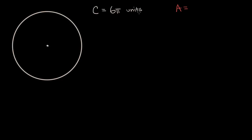First, think about if you could figure out the area for this particular circle, and then let's see if we can come up with a formula for, given any circumference, can we figure out the area and vice versa? All right, now let's work through this together. The key here is to realize that from circumference, you can figure out radius, and then from radius, you can figure out area.